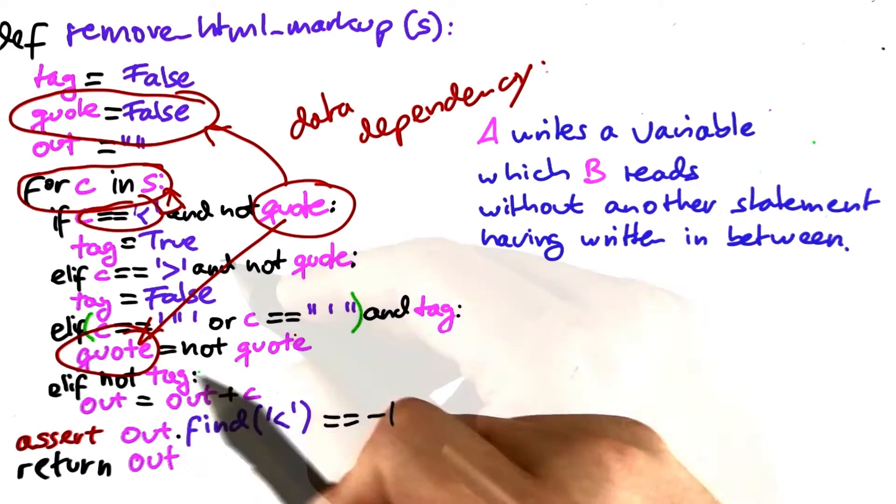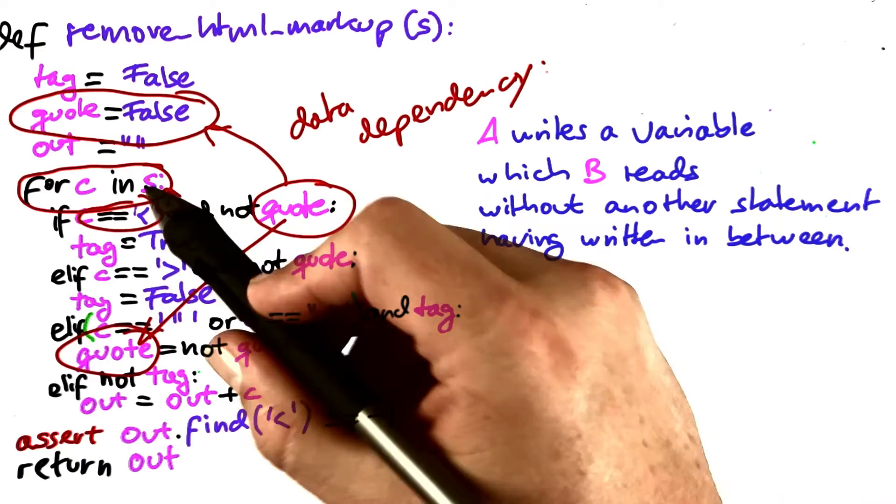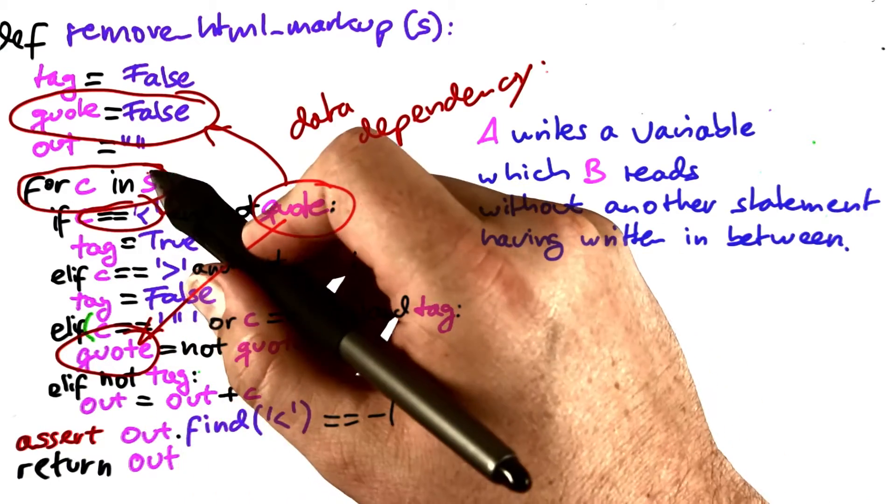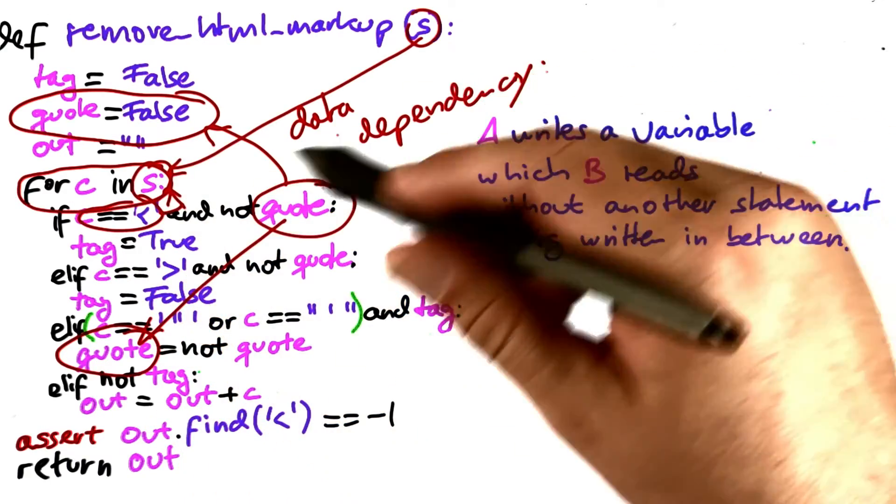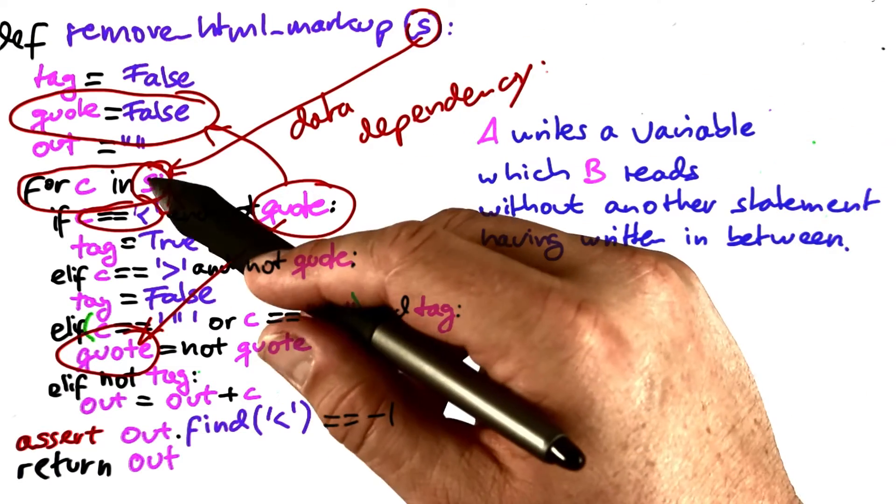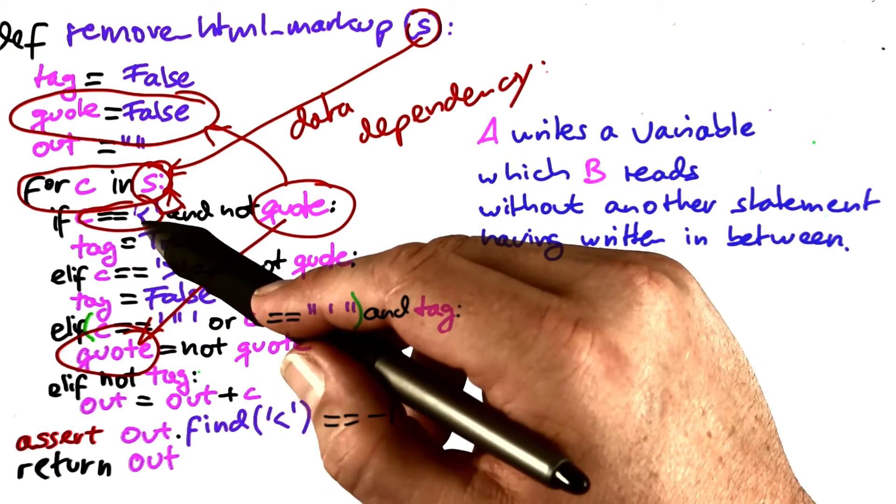And we can do so again. If we're up here, for instance, and we want to know where c comes from, well, c comes from s, and s comes from up here. s first goes down here, then defines c, and then c is being checked.